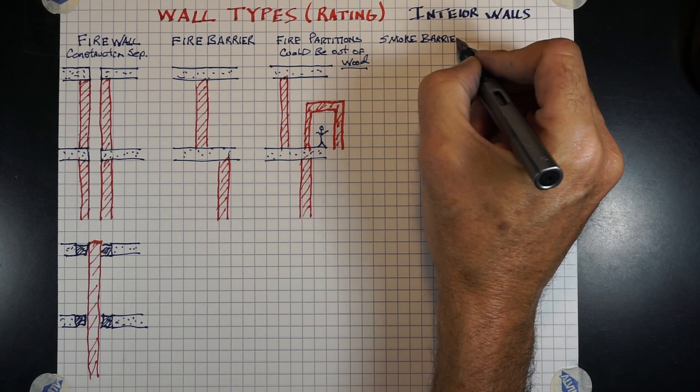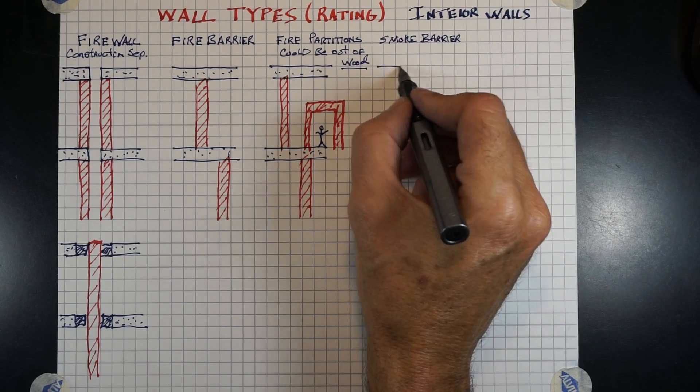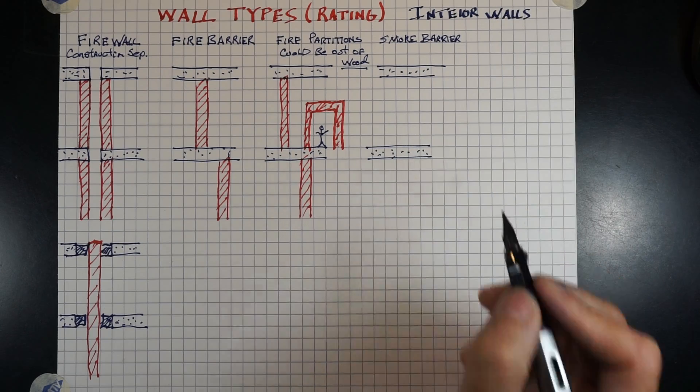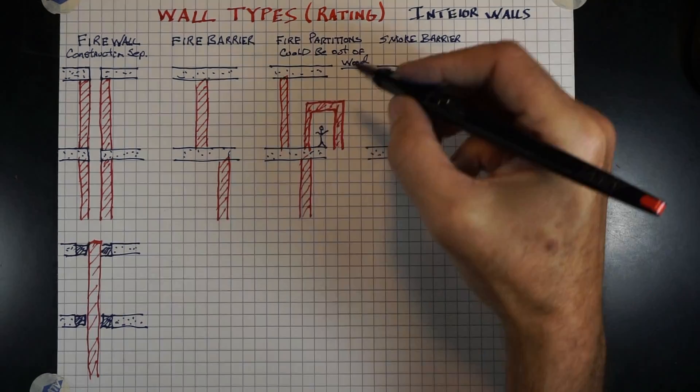Smoke barrier. A smoke barrier also can go from structure, floor, to structure above. They do not have to be in alignment from floor to floor.